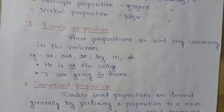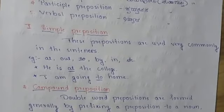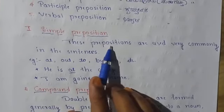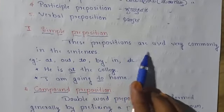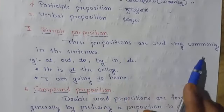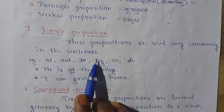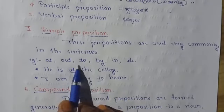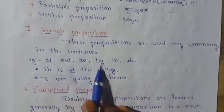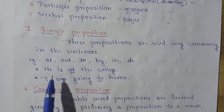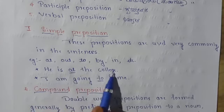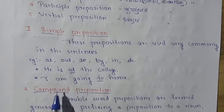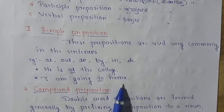Let us come to know about the first one, that is simple preposition. These prepositions are used very commonly in sentences. For example: at, out, to, by, in, etc. For example: He is at the college. I am going to home.